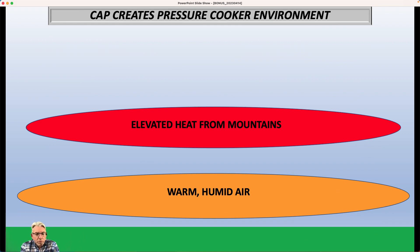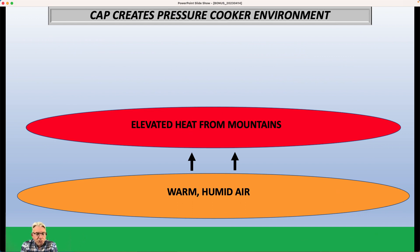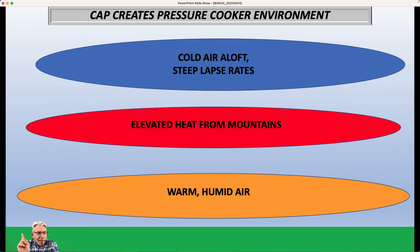This cap creates what we call a pressure cooker environment. Out on the Great Plains, you can still be plenty warm and plenty humid, but above that warm humid air is this elevated heat layer from the mountains — we call it an elevated mixed layer. The air in this warm humid air mass tries to rise, but in many cases it does not become buoyant because the air up above is so warm. It ends up being cooler than the environment it's trying to rise into, so it stops rising and goes back down. Nothing happens. It's warm, it's humid — you think it's a perfect scenario for thunderstorms — but nothing happens. The sky just remains clear and everything is very, very quiet.